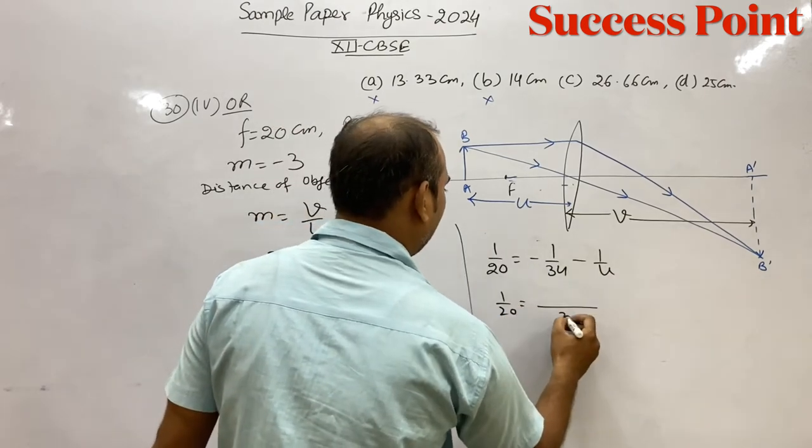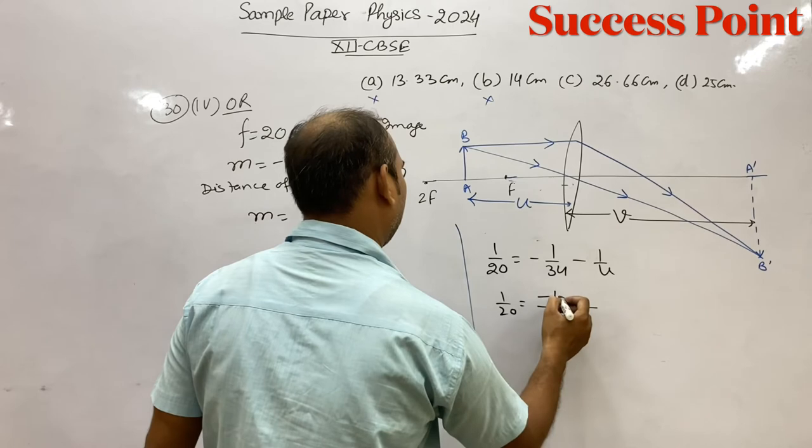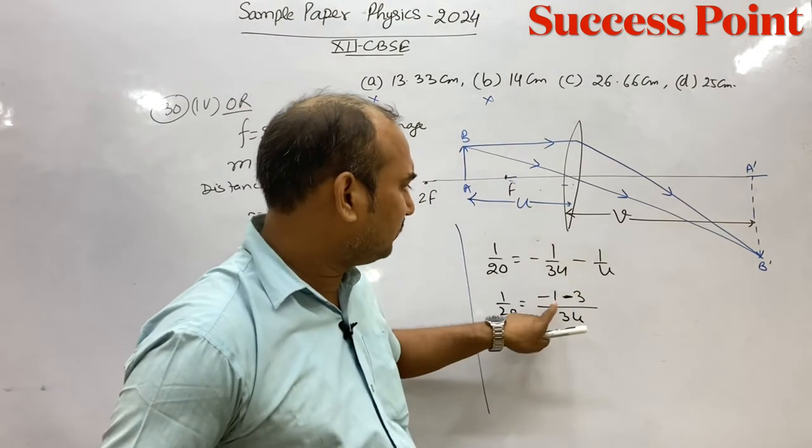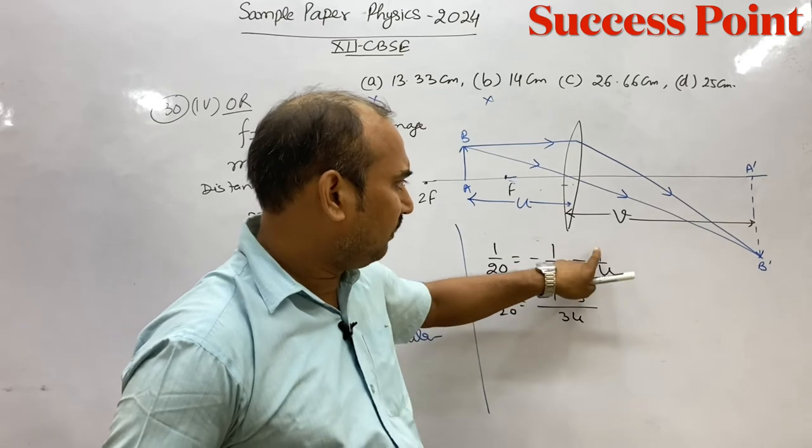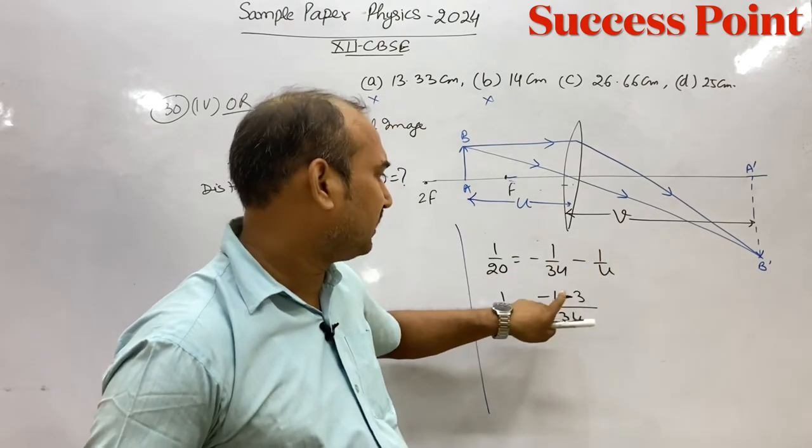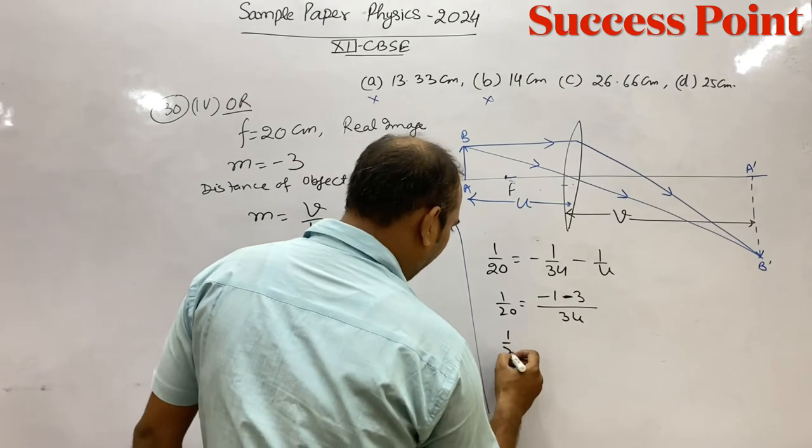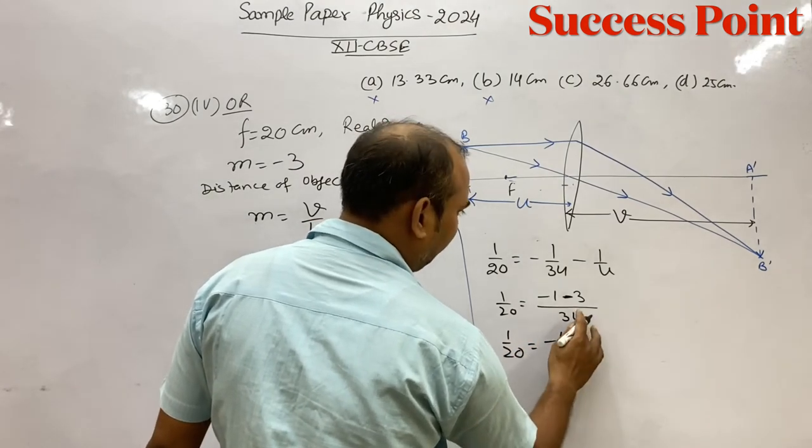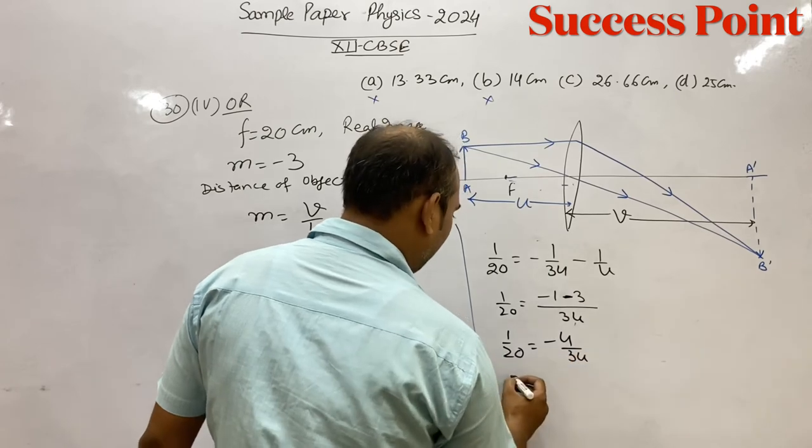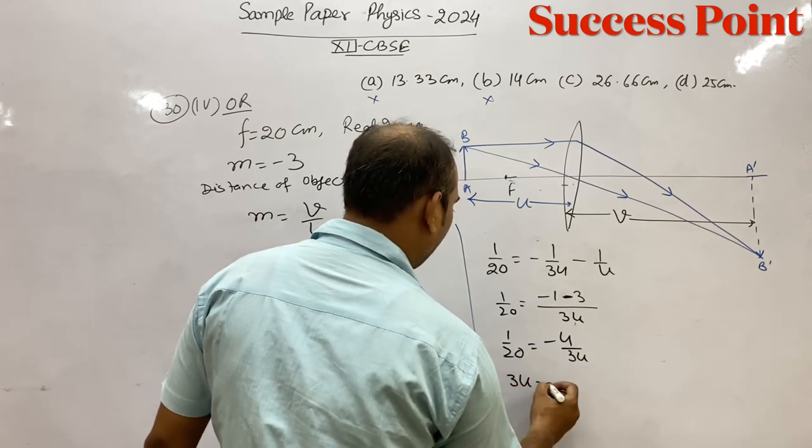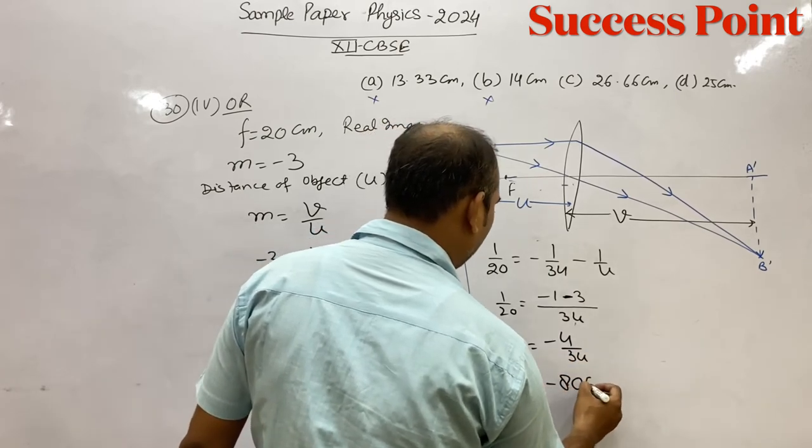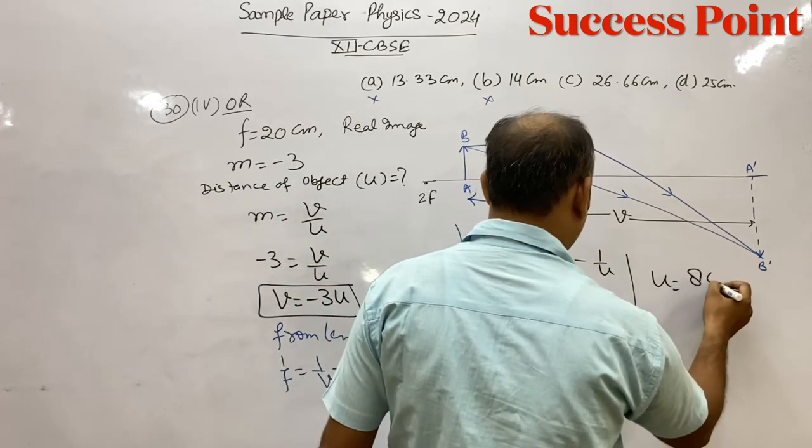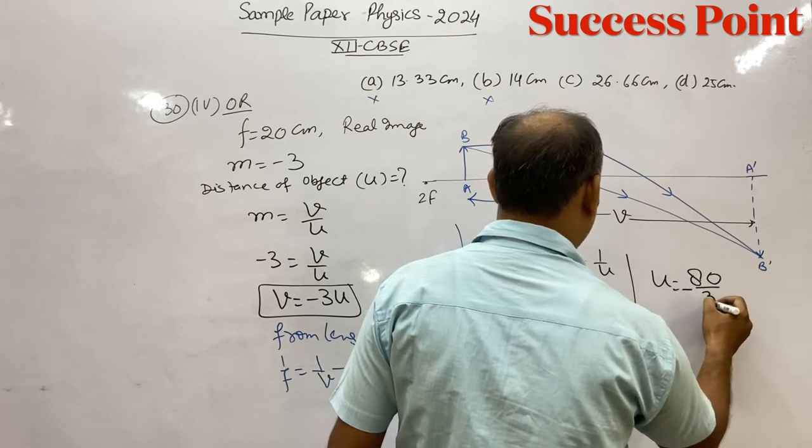So one upon 20 equals what? Taking LCM 3U, what will happen? Minus 1, here 3, to make it 3, multiply by 3, minus 3. So 1 upon 20 equals minus 4 upon 3U. So 3U equals minus 80 centimeter.